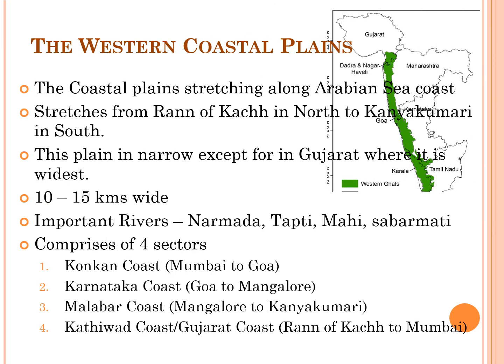The Western Coastal Plains stretch from the Rann of Kutch in the north to Kanyakumari in the south. This plain is narrow except in Gujarat, where it is the widest, at about 10 to 15 kilometers wide. Important rivers in the Western Coastal Plains are Narmada, Tapti, Mahi and Sabarmati. The Western Coastal Plains comprise four sectors: the Konkan coast from Mumbai to Goa, the Karnataka or Kannada coast from Goa to Mangaluru, the Malabar coast from Mangaluru to Kanyakumari, and the Kathiawar or Gujarat coast from the Rann of Kutch to Mumbai.